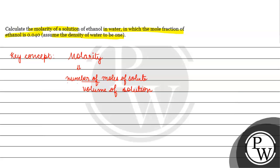If we look at the mole fraction of ethanol, we have been given 0.040. The mole fraction is very low. We have ethanol and water. If the amount of ethanol is low, ethanol will be the solute and water will be the solvent.